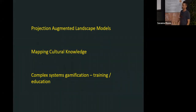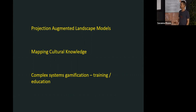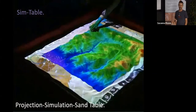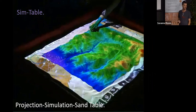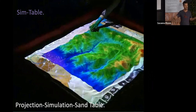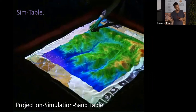I'll be talking about this projection augmented landscape model approach that I've been applying across northern Australia and around the world — how it applies to mapping cultural knowledge, and related to that, my interest in complex systems and gamification and how they support training and education. My start in projection augmented landscapes — I'd really like to acknowledge the amazing work developed by a group called SimTable, a California-based company. They took techniques long used by emergency services and the military, where you use physical 3D models of an area for responding — sand tables with trees, bits of paper, matchbox cars — as a way to talk through a particular response.